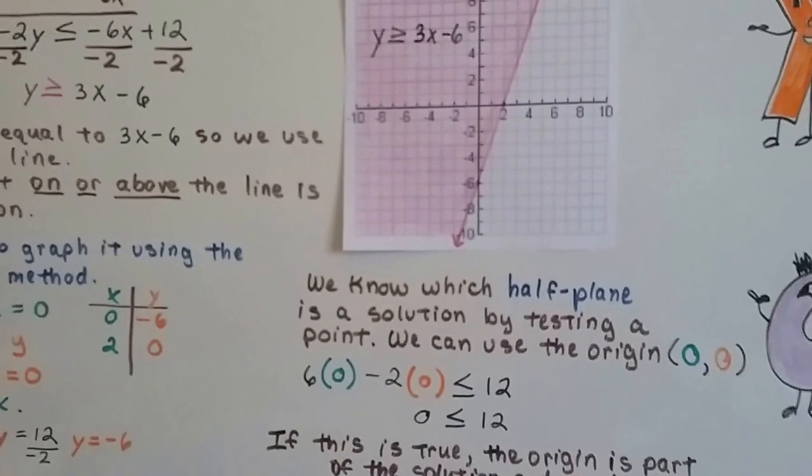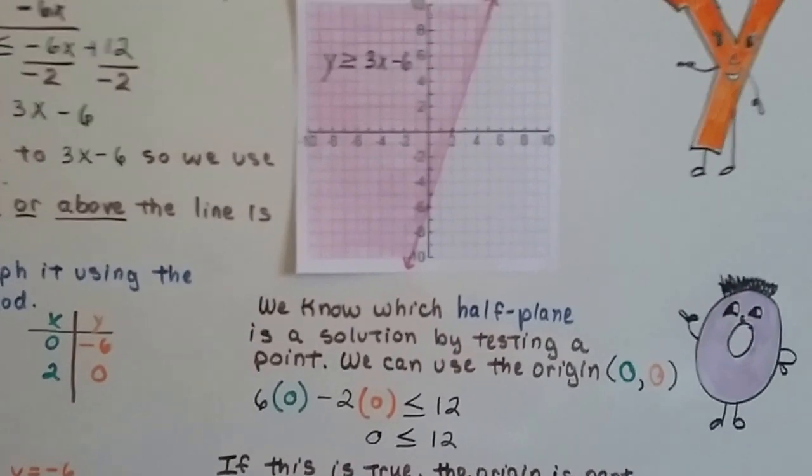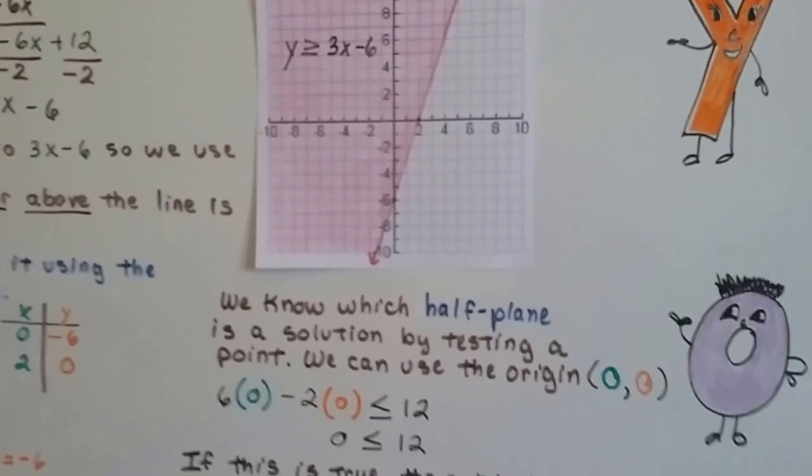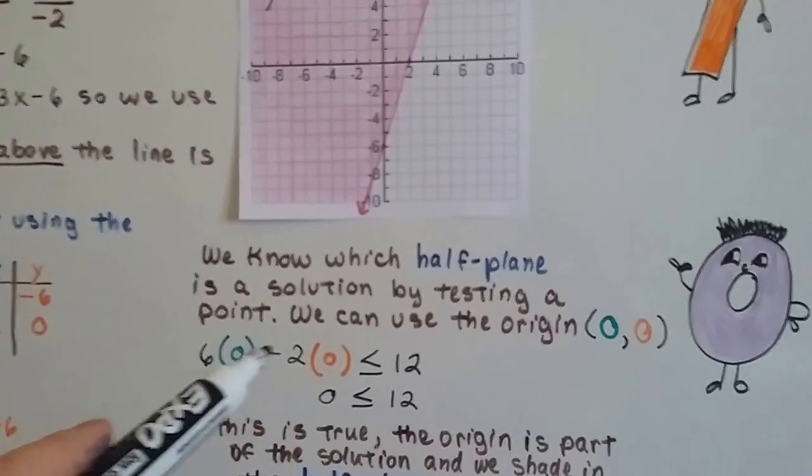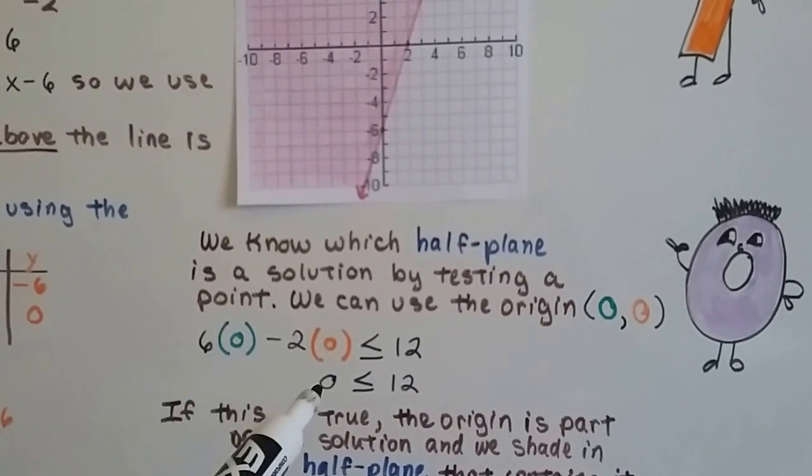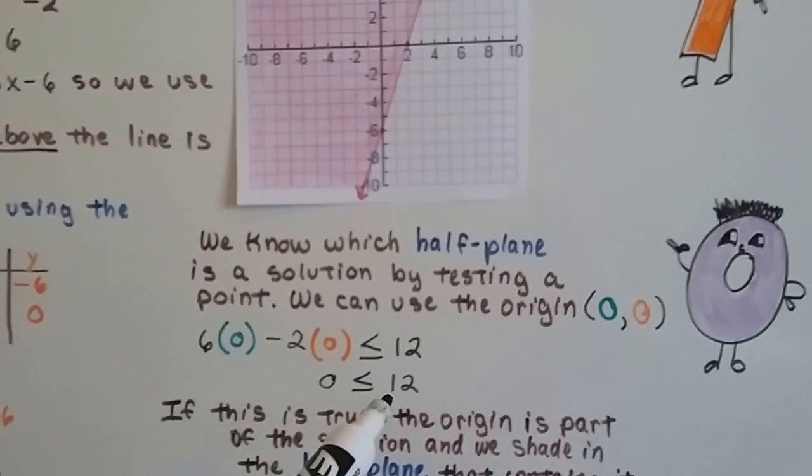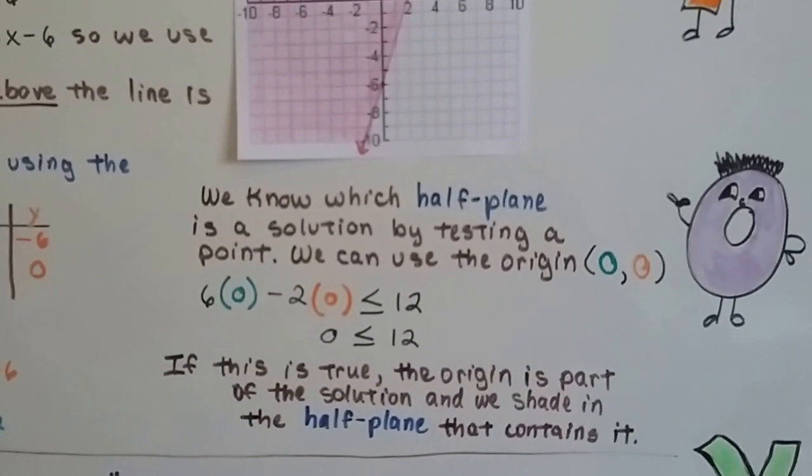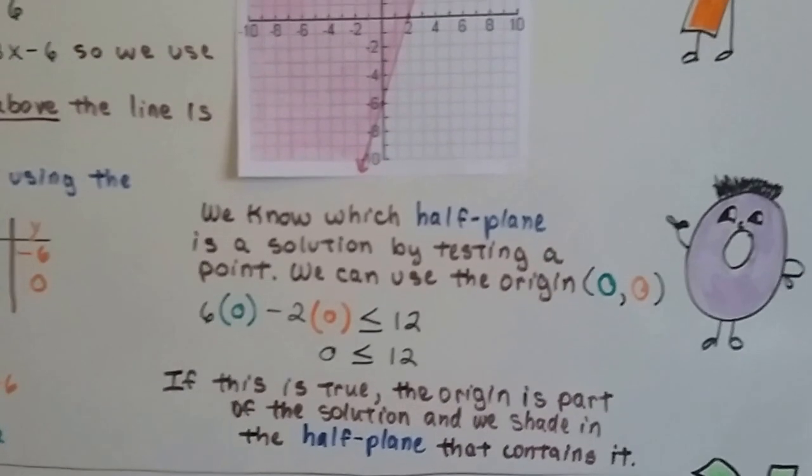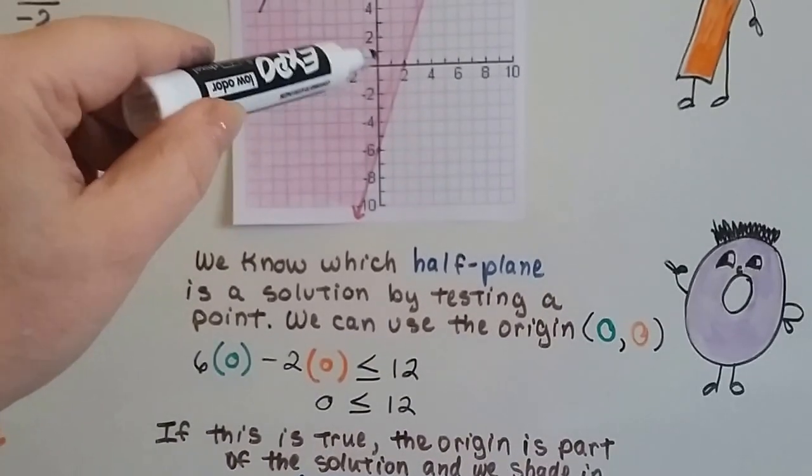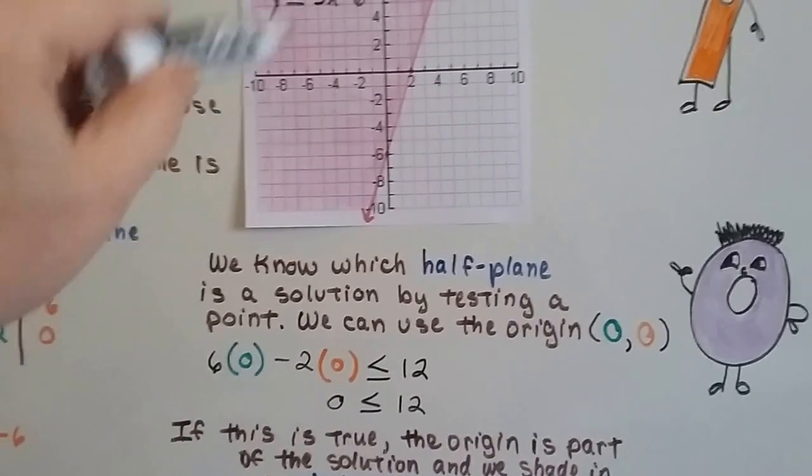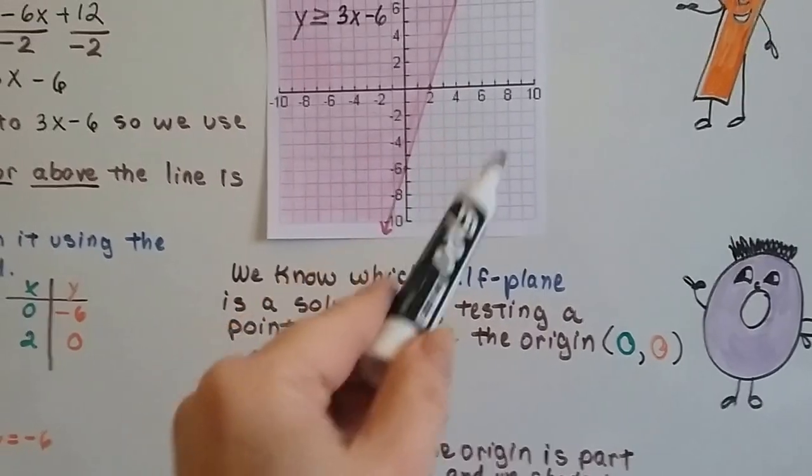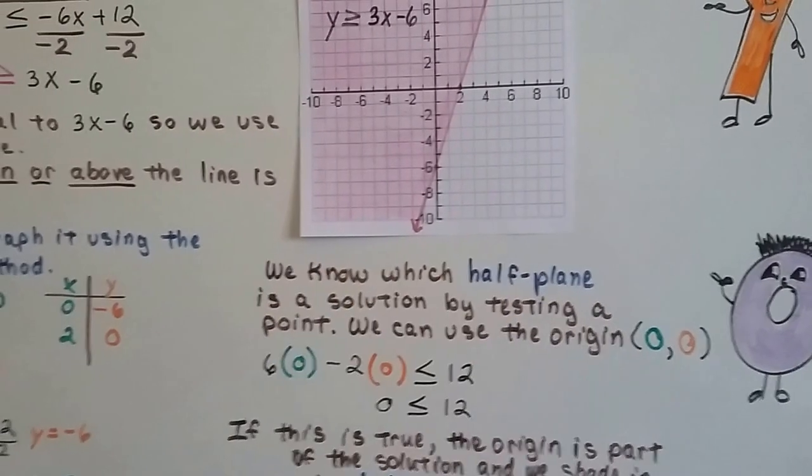We know which half plane is a solution by testing a point. You usually use the origin (0, 0) as your testing point. So you try solving it, plugging in (0, 0) into the inequality, and if 6(0) - 2(0) ≤ 12, if 0 is less than or equal to 12, yeah it's less than, it's part of the solution. If this is true, the origin is part of the solution, and we shade in the half plane that contains it. So the origin is (0, 0) right here. If it's part of the solution, then that's the part that we shade in. If it wasn't part of the solution, then we shade in the part that doesn't have the origin.